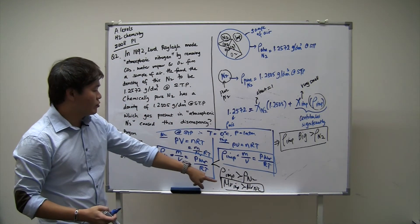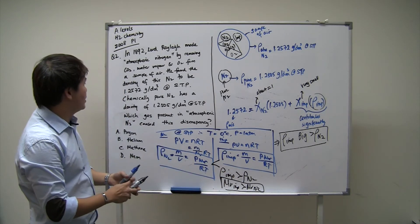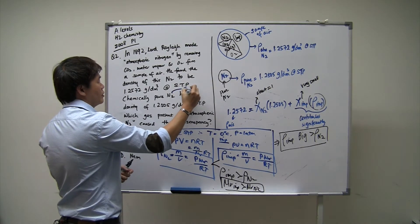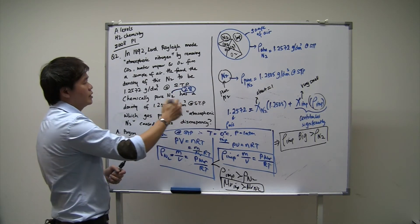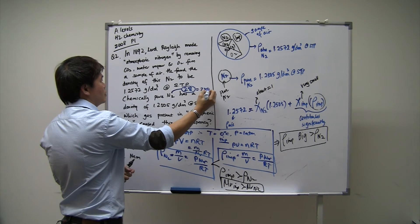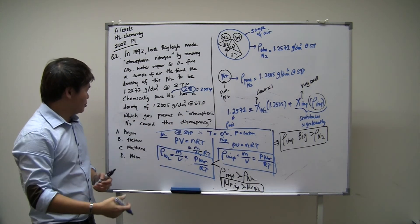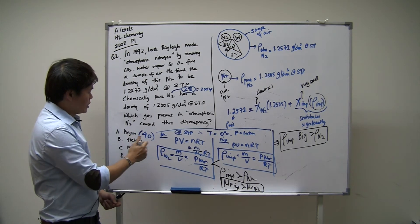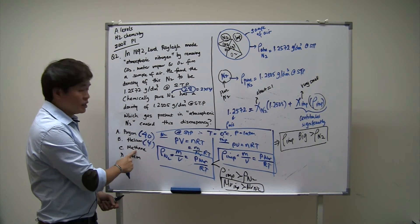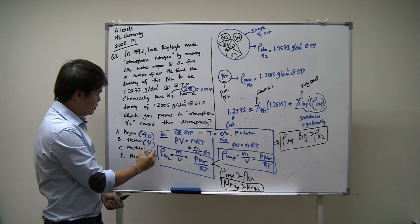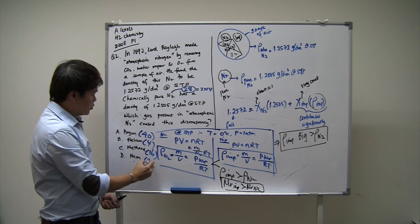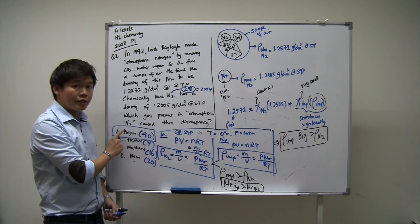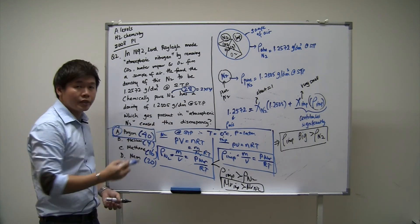So we compare the MR of the impurity with the MR of nitrogen. From the periodic table, nitrogen's MR is 28 (N = 14, so N₂ = 28). Argon's MR is 40, helium's MR is 4, methane (CH₄) has MR = 16, and neon's MR is 20. Therefore, the only gas whose MR is bigger than nitrogen's MR of 28 is argon. And that is how we get argon as the answer.